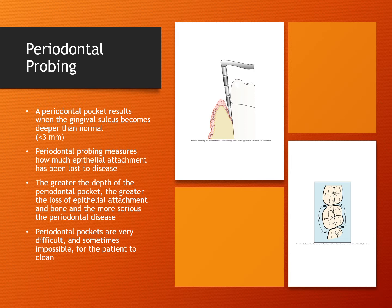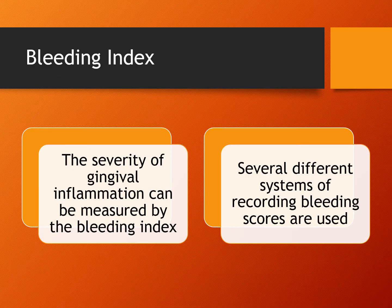Greater pocket depth equates to more serious periodontal disease. A pocket reading of less than three millimeters is considered normal. Anything above three millimeters is a sign of more serious periodontal disease. The periodontist also looks for signs of bleeding, called the bleeding index — the amount of bleeding observed during probing. Several different systems of recording bleeding scores are used, each based on the principle that healthy gingiva does not bleed.